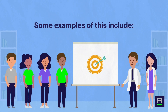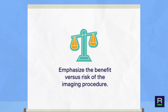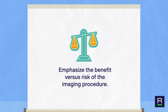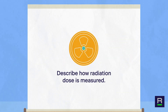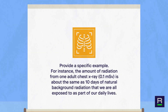Some examples of this include: emphasize the benefit versus risk of the imaging procedure, describe how radiation dose is measured, and describe naturally occurring background radiation in comparison to the exam.